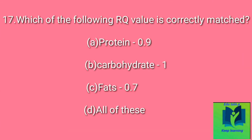Which of the following RQ value is correctly matched? Option A: Protein – 0.9. Option B: Carbohydrate – 1. Option C: Fats – 0.7. Option D: All of these. Answer: All of these.